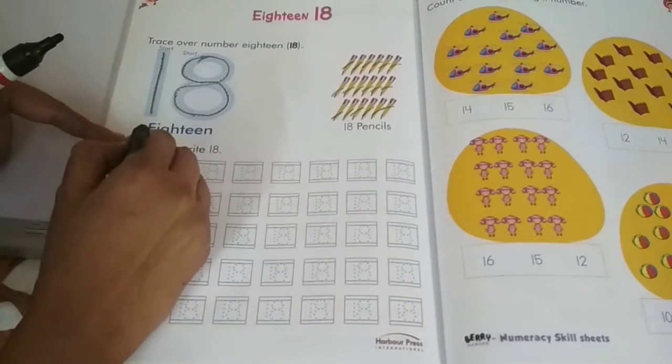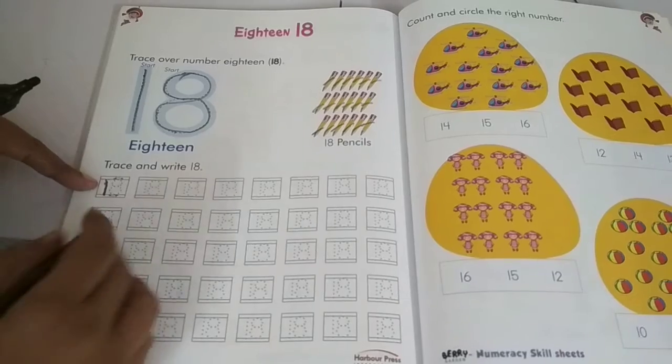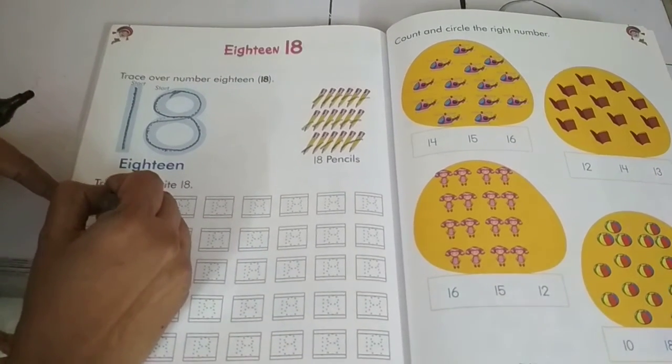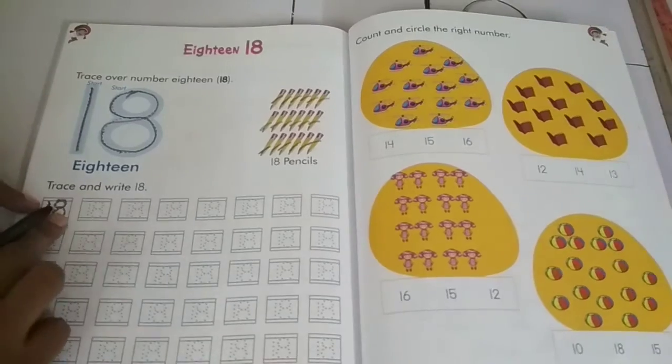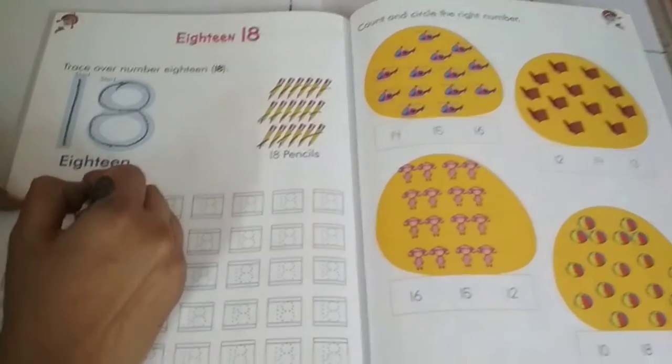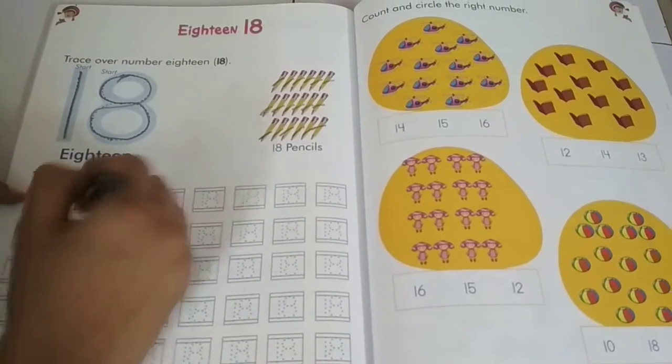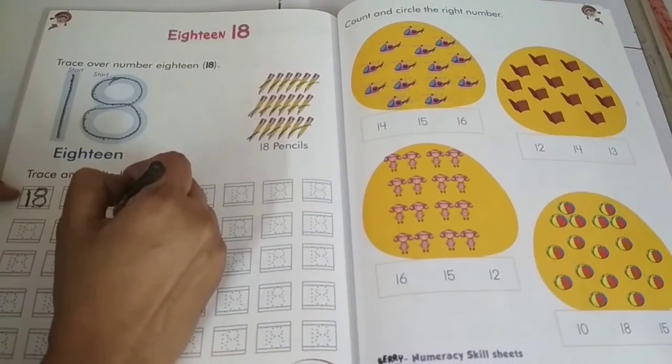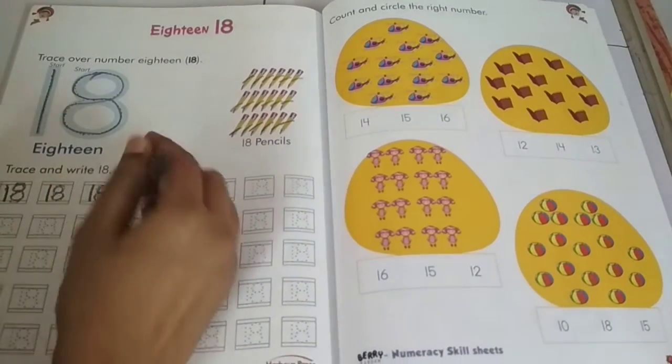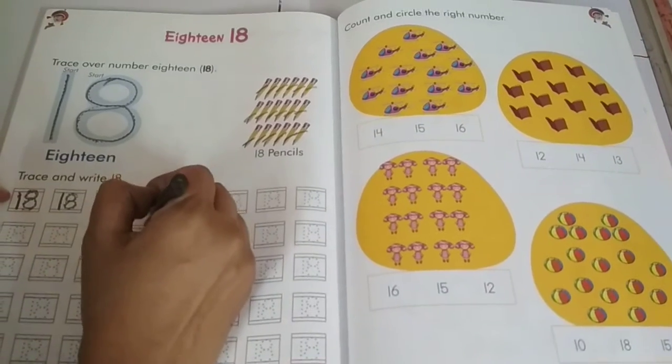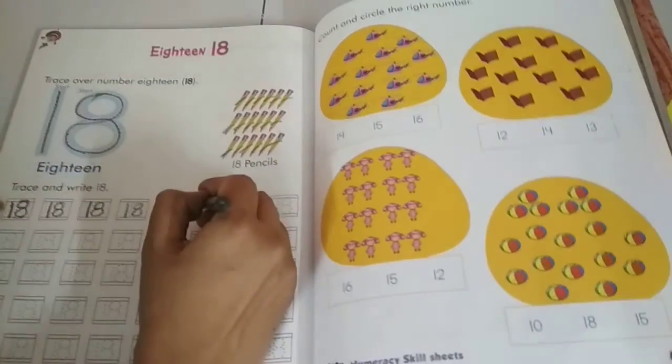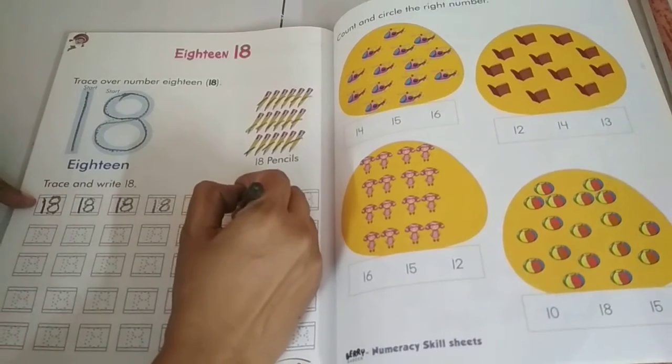Here, we are going to trace this. A standing line. S pattern. And reverse S pattern. 1, 8, 18. 1, 8, 18. Standing line, S pattern, and reverse S pattern. 18. 1, 8, 18.